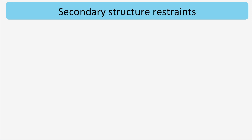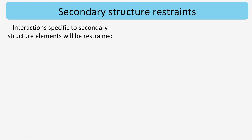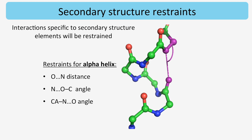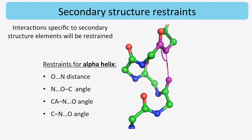If secondary structure restraints are enabled, interactions specific to these elements will be restrained during refinement. For example, in helices, this will be the N-O bond lengths and the following angles: the N-O-C angle, the Cα-N-O angle, and the C-N-O angle. Note that this is in addition to any other restraints applied, such as usual bond and angle restraints.